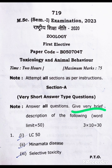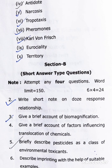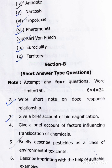In Section A, the note says: answer all questions with a very brief description, and the word limit is 50. The questions are: Q1 — LC50, Q2 — Minamata Disease, Q3 — Selective Toxicity, Q4 — What is Antidote, Q5 — Narcosis, Q6 — Troppo Taxes, Q7 — Pheromones, Q8 — Karl Von Frisch, Q9 — Eurospirituality, Q10 — Terrestri.